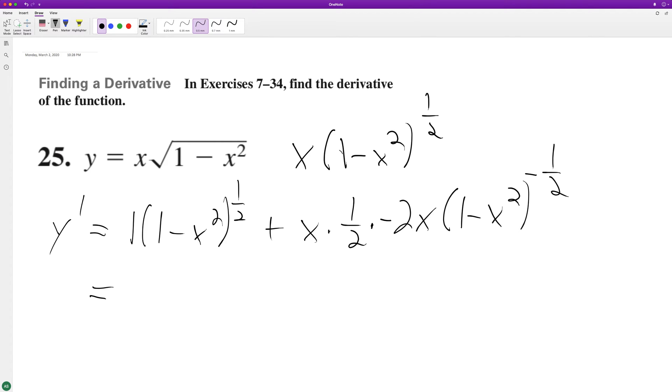Simplify down further, we have 1 minus x squared, and actually I'm just going to write it as square root. Square root of 1 minus x squared, plus the 1 half and the 2 negative, well the 2 cancel out, so we're left with negative x squared.